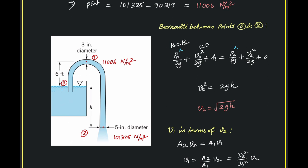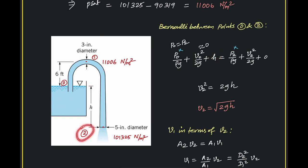Points 0 and 2 are at the same pressure since both are open to atmosphere, so the pressure terms cancel. The velocity at point 0 is negligible because the reservoir area is much larger than the pipe area — by continuity, A₀V₀ = A₂V₂, so V₀ ≈ 0. Point 0 is taken as the reference elevation. Rearranging Bernoulli gives the velocity at point 2 as V₂ = √(2gH).